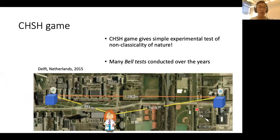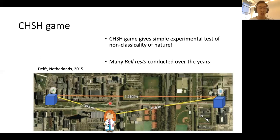This is not just theoretical — the CHSH game has been conducted experimentally as part of what's known as a Bell test. In 2015, the CHSH game was performed on the campus of TU Delft in the Netherlands, where the two boxes were placed over a kilometer apart. They played this game with a verifier in the middle and observed a winning probability strictly greater than 75%, confirming that non-classical correlations exist in nature. Quantum physics provides the best explanation for this.